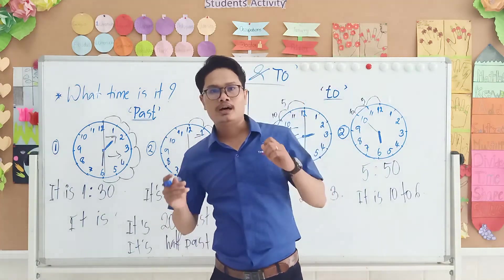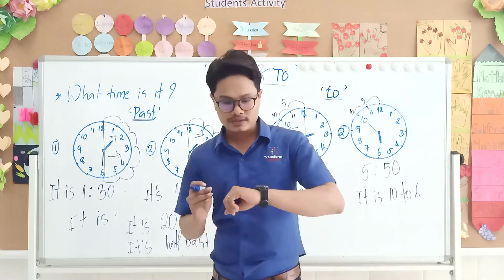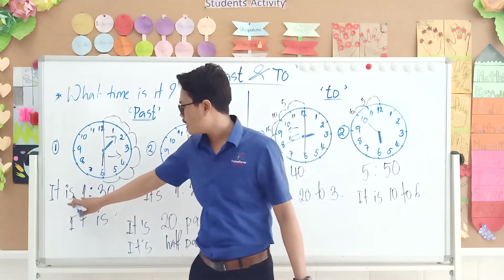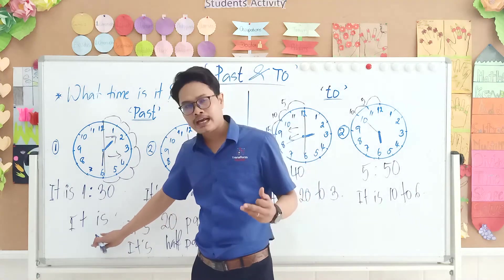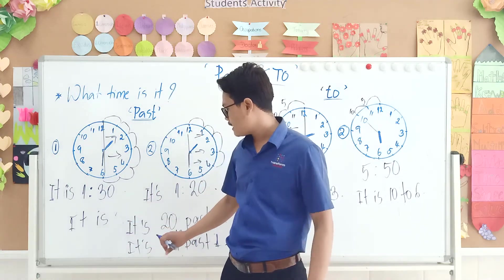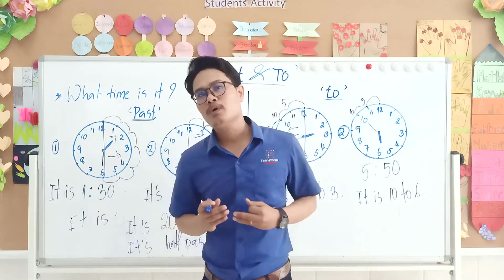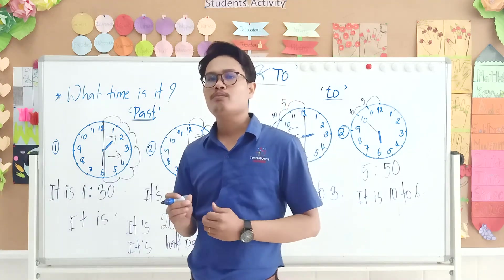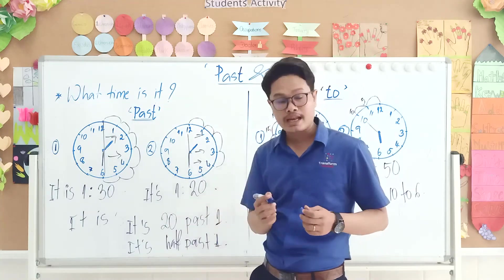But most of you in Cambodia, I see that when someone asks you what time is it, you say it is 1:30 like that. I never heard someone say it is 20 past 1. So it is a common way that mostly in Cambodia they speak like this, it is 1 and 20 minutes.